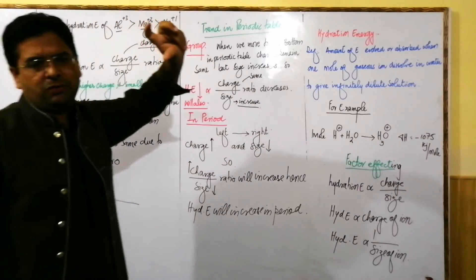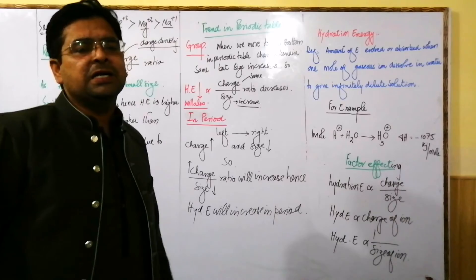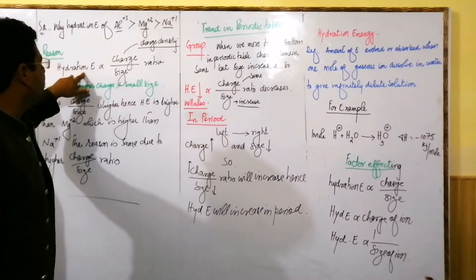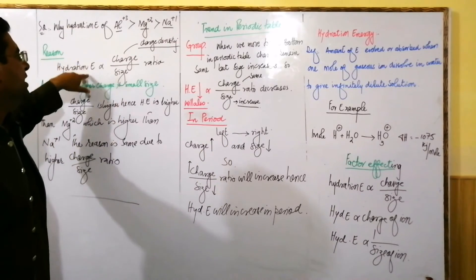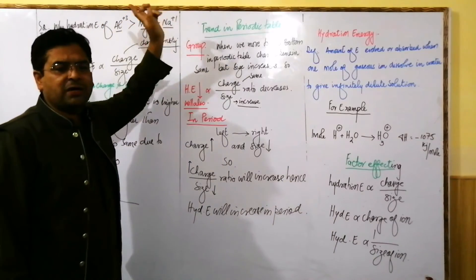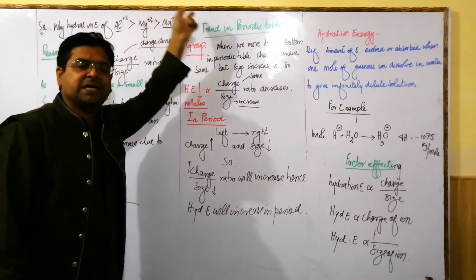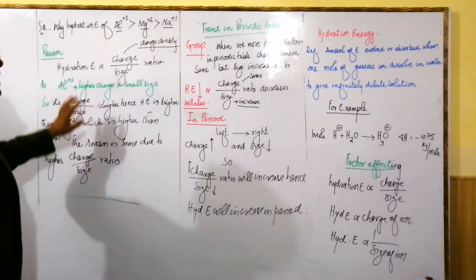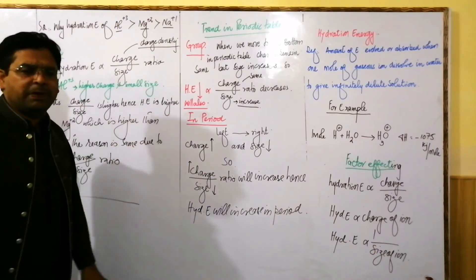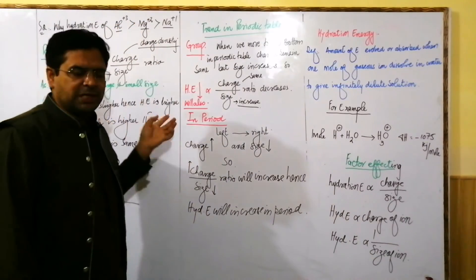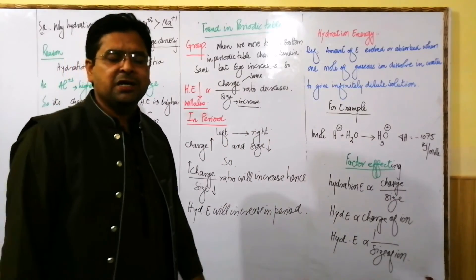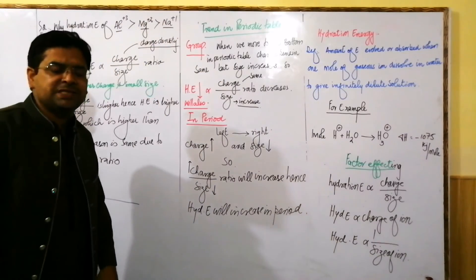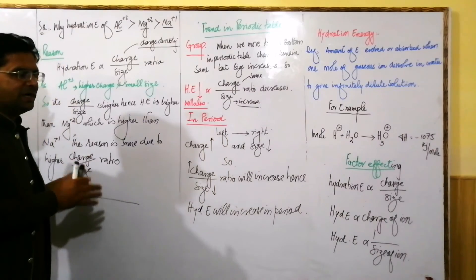Al⁺³ has a smaller size because as more electrons are removed, the nuclear pull increases and the size decreases. So hydration energy increases. Al⁺³ has higher charge density than Mg⁺², and Mg⁺² has higher charge density than Na⁺¹. The greater the charge density or charge-to-size ratio, the greater the hydration energy. This is the end of this article.